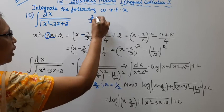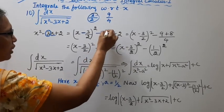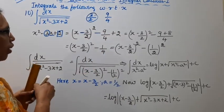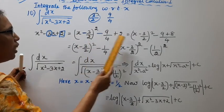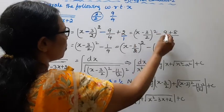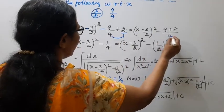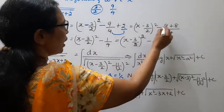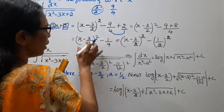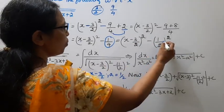If you have minus: 3 by 2 square — 3 square is 9, 2 square is 4 — minus 9 by 4, plus 2. Now, x minus 3 by 2, the whole square. 1 into minus 9 is minus 9, plus 4: 2's are 8, by 4. Then x minus 3 by 2, the whole square: minus 9 plus 8 equals minus 1 by 4. So this becomes x minus 3 by 2, the whole square, minus 1 by 2, the whole square.